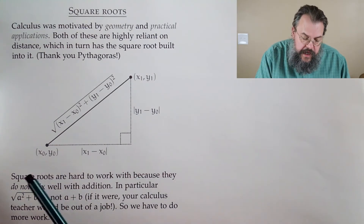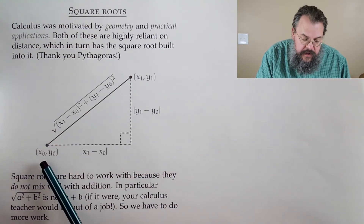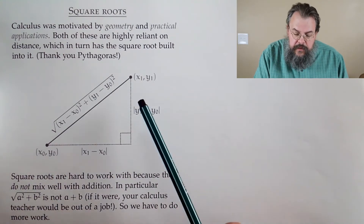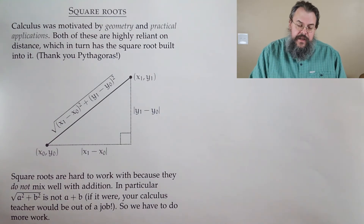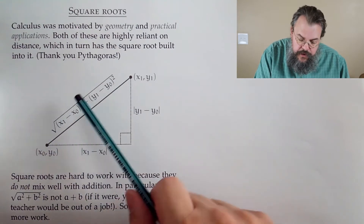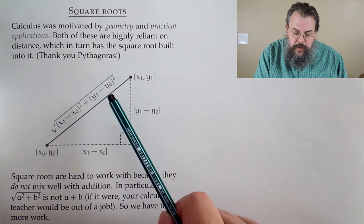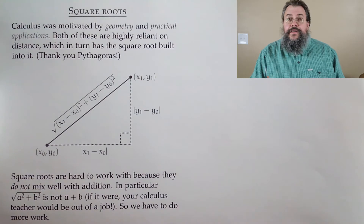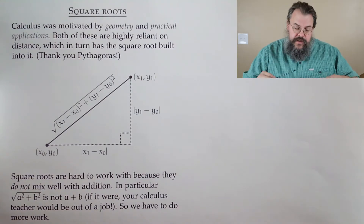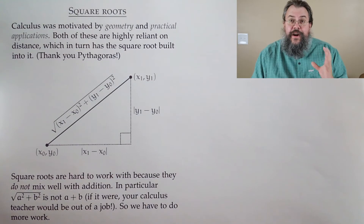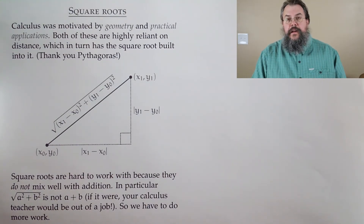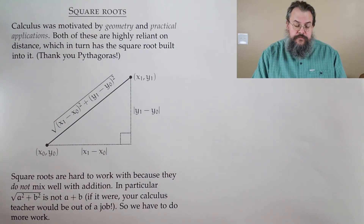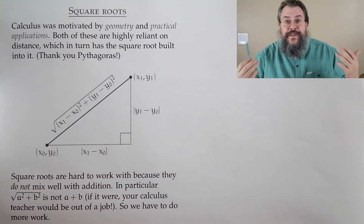If I have a point described by coordinates (x₀, y₀) and another point (x₁, y₁), then the distance by the Pythagorean theorem is the square root of the change in x squared plus the change in y squared. So square roots are there for a very important reason — they show up in distance, and distance shows up in many, many applications. So we need to learn to deal with the square root.